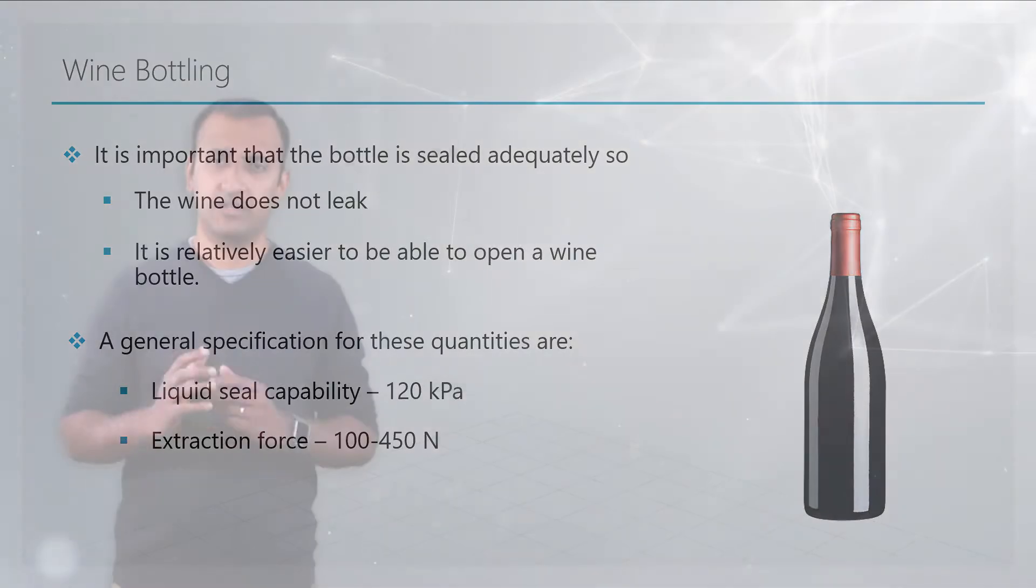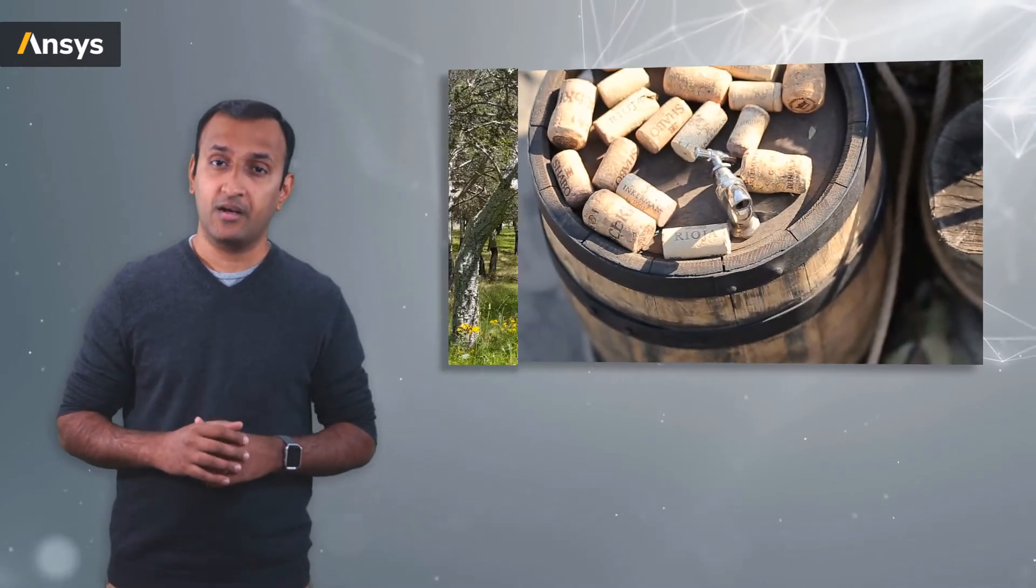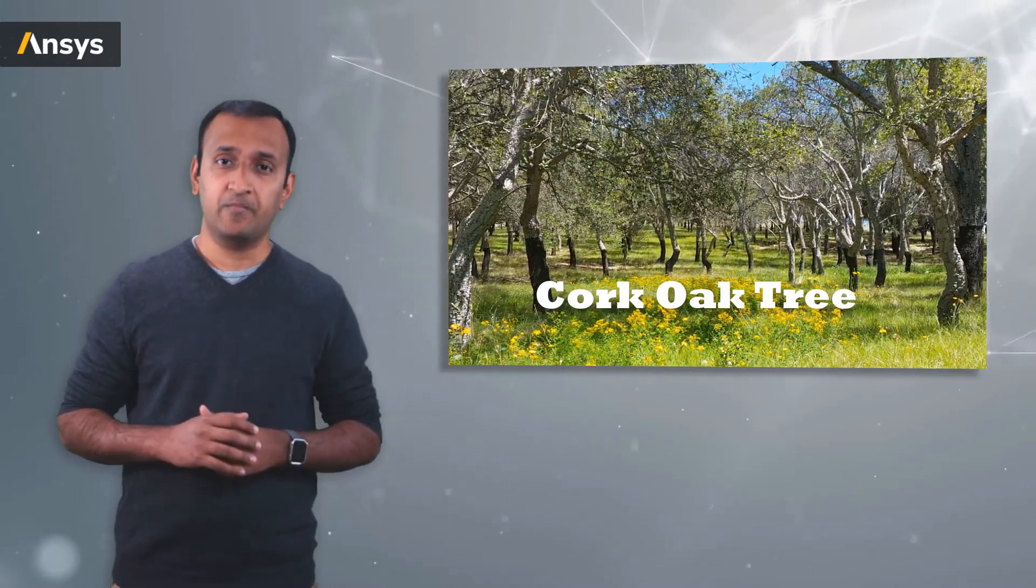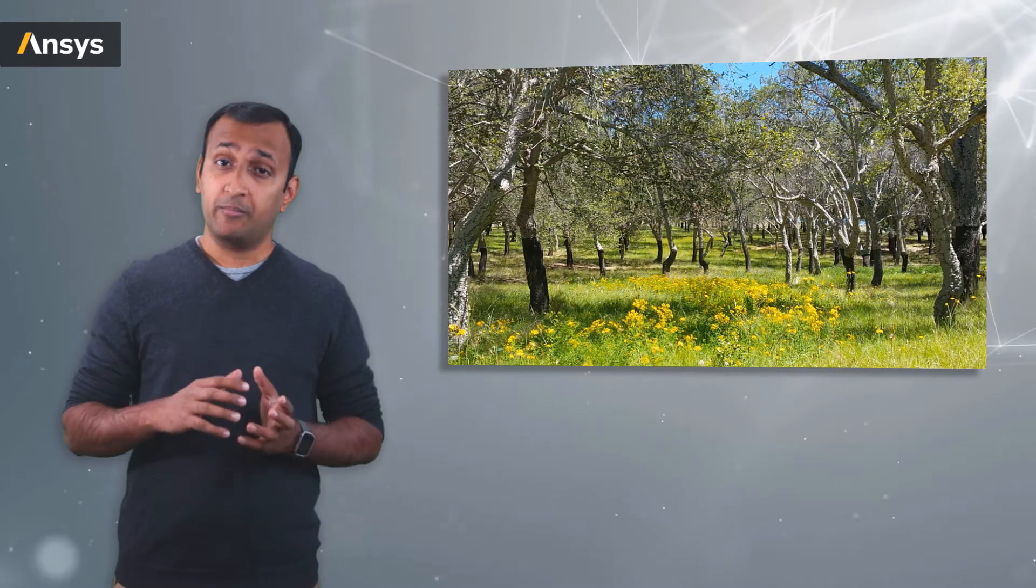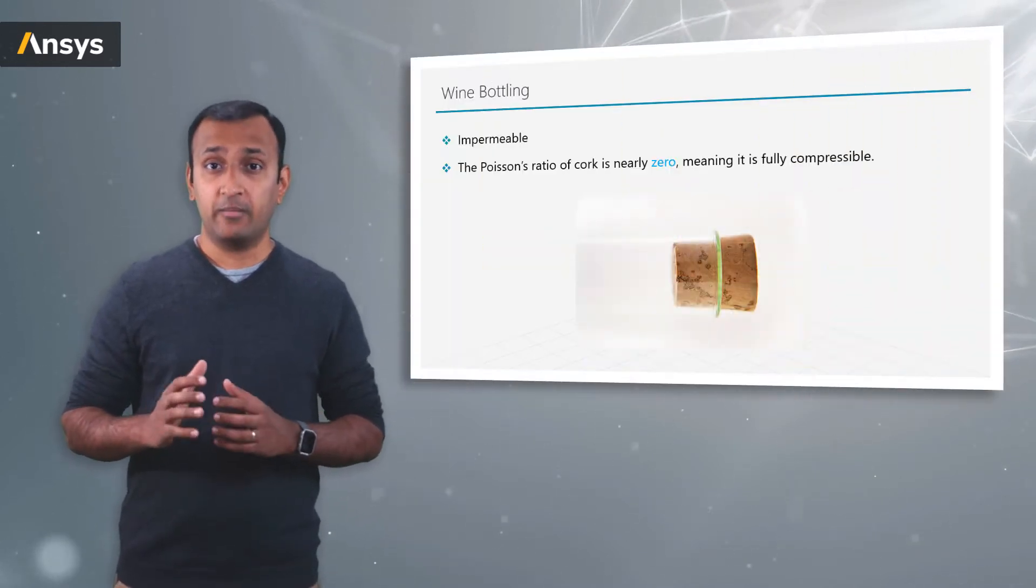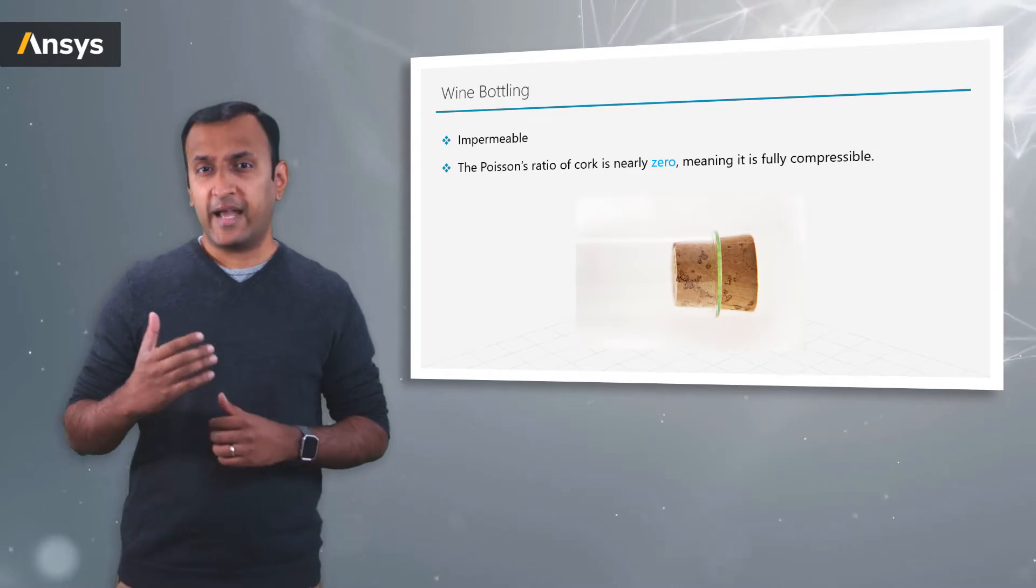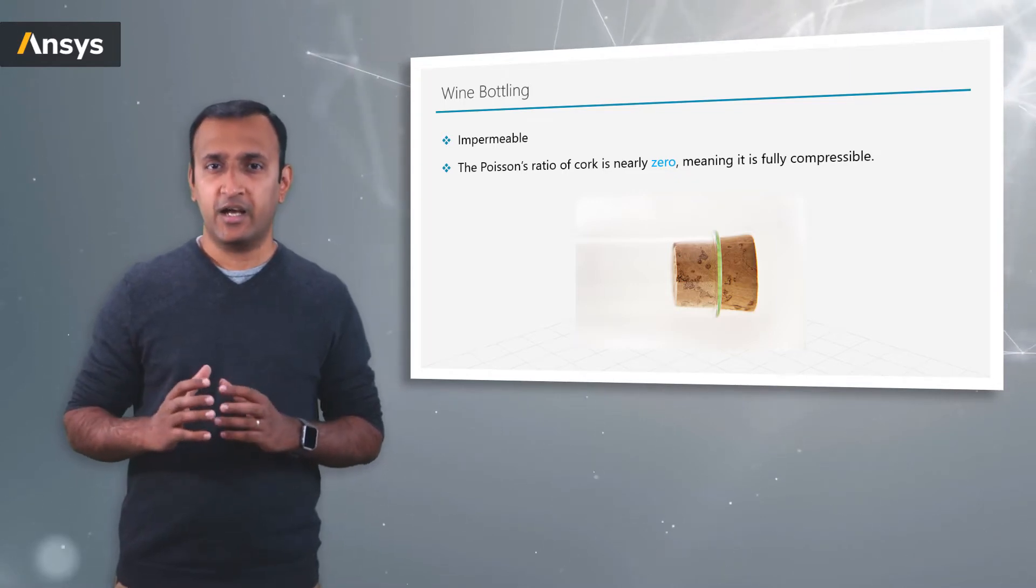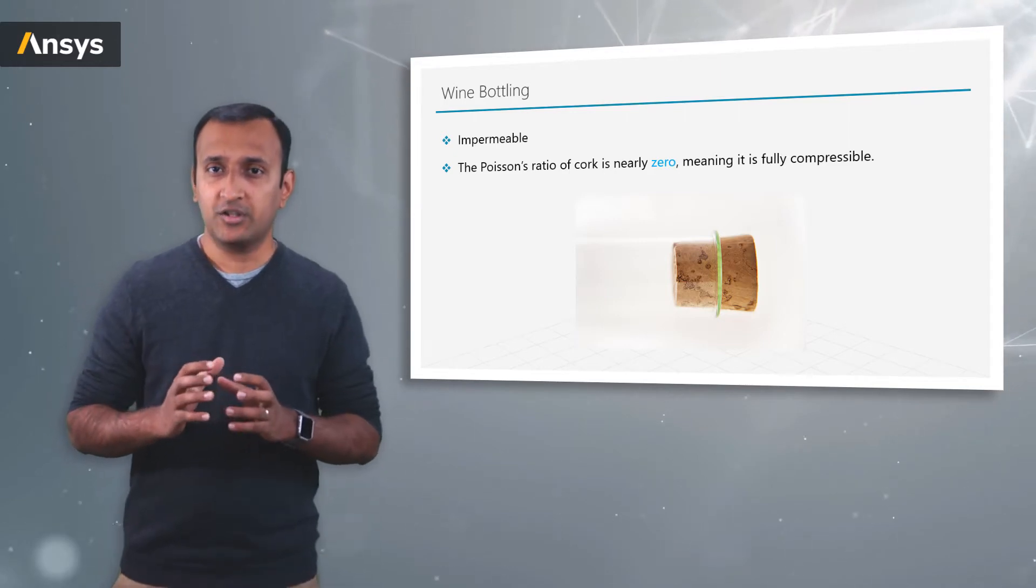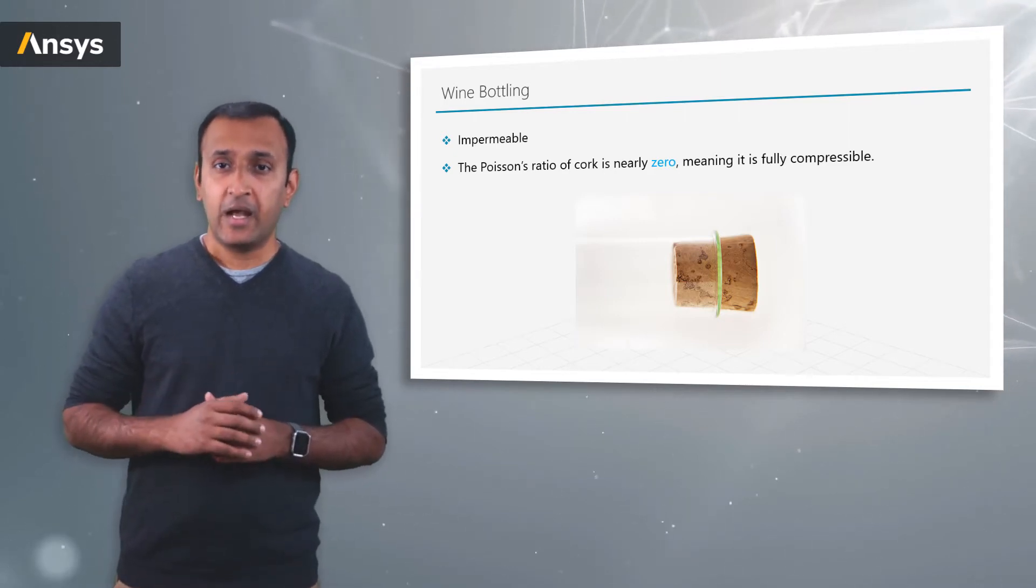This is achieved by making a stopper made from cork material. Cork is a special type of naturally occurring material that's known to be both impermeable and compressible, meaning it doesn't absorb any of the liquid and it can change its volume very easily upon deformation. The Poisson's ratio of the cork material is nearly zero.